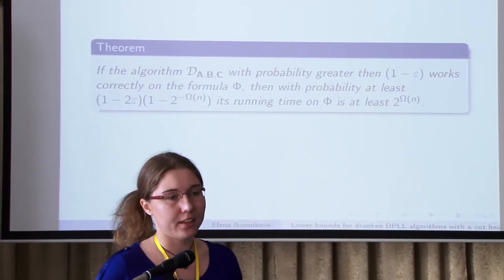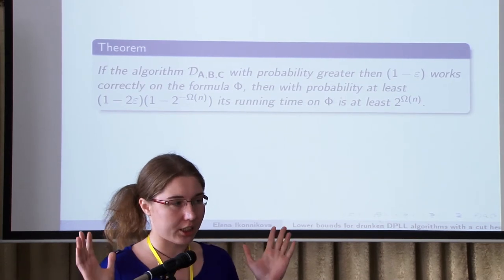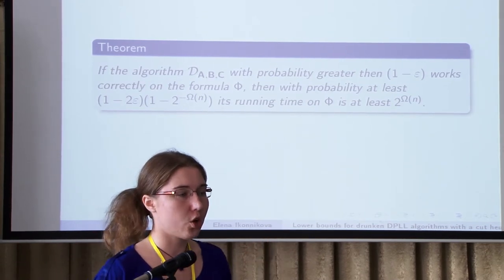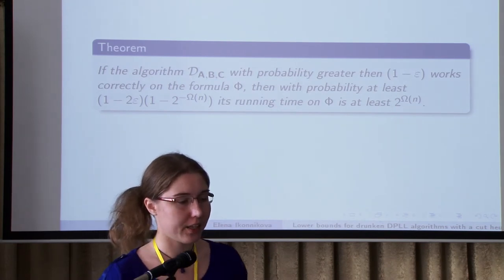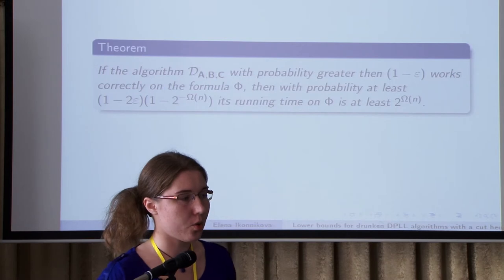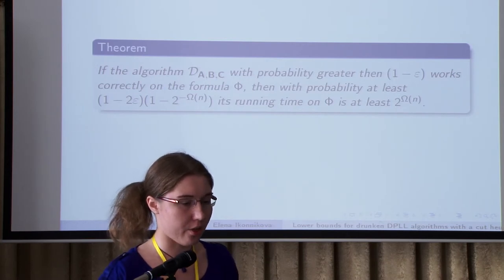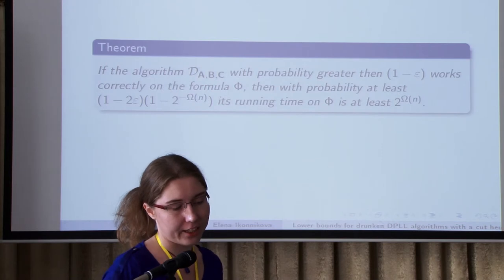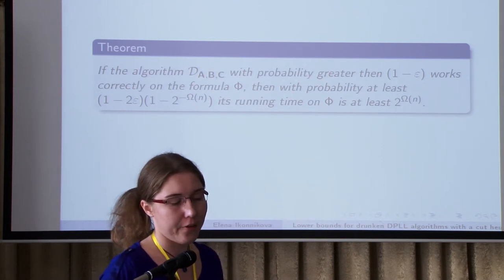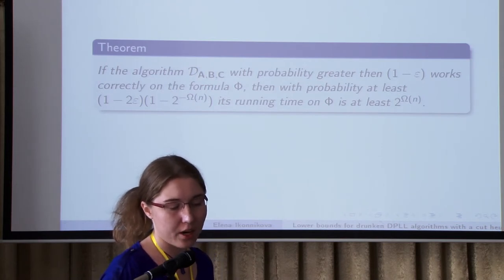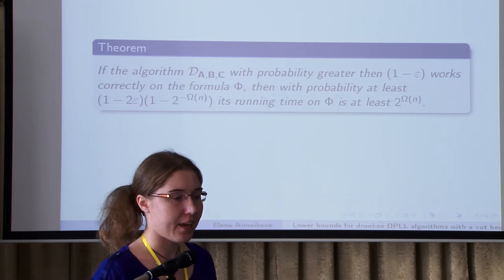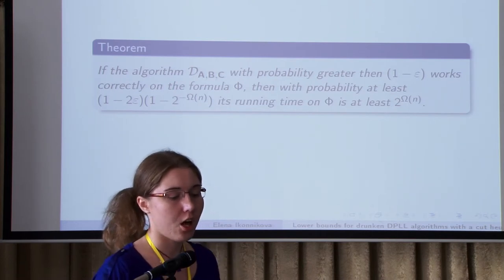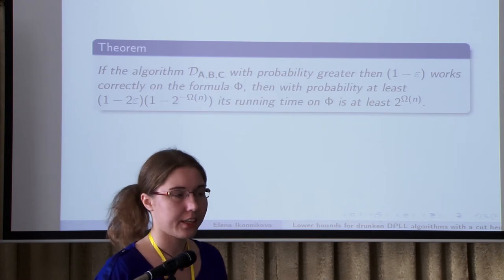Well, the expander consists of two parts. The vertices in one part correspond to the variables and the vertices in the other part correspond to the equations in that system. The equation just says that the sum of the neighboring vertices is zero.